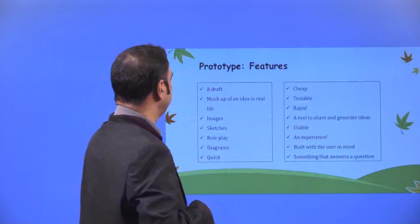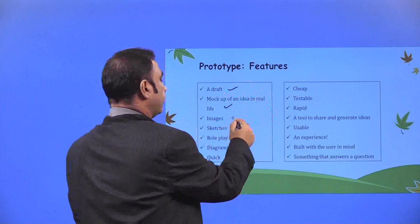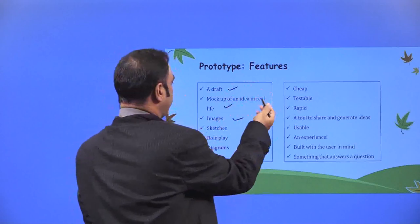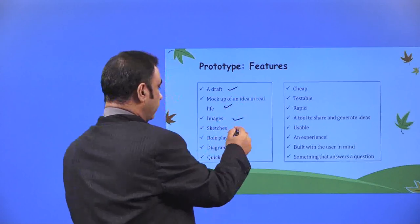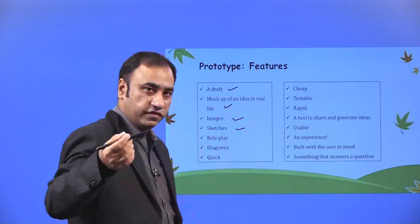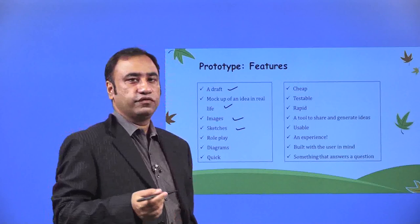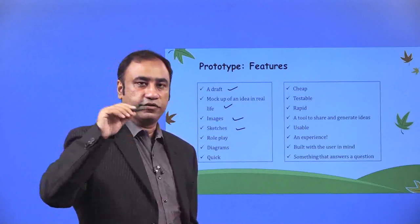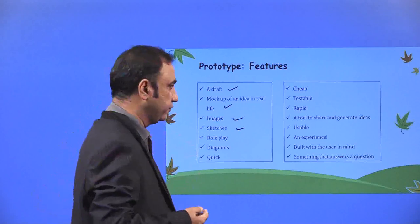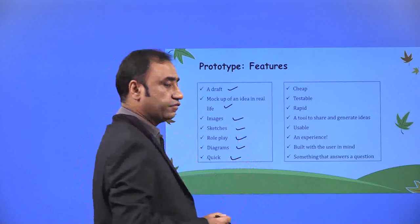Prototyping features a draft, a mock-up idea in real life. It can be images, mock-up experiences, or sketches — it can be a simple pencil sketch. Prototyping is so easy that you can even use a pencil and paper: a blank paper where you sketch your prototype, and that sketch explains your product. Other types include roleplay, diagrams, and quick snapshots.